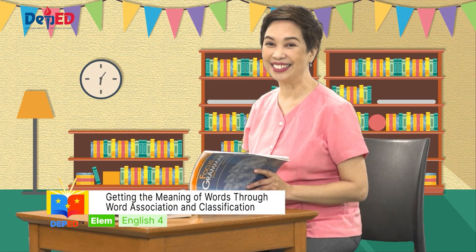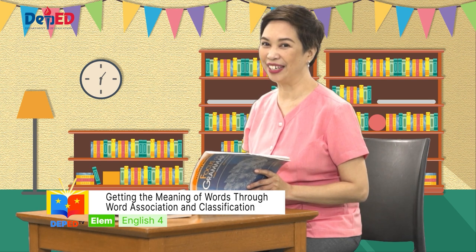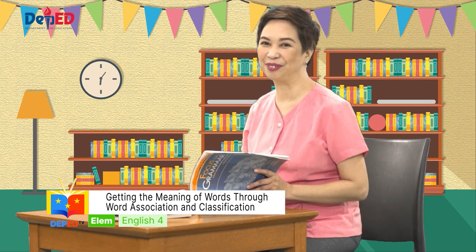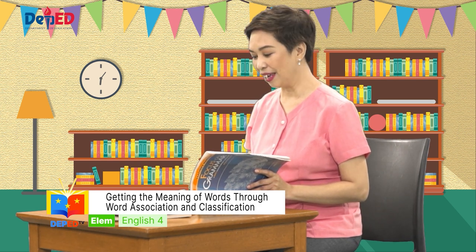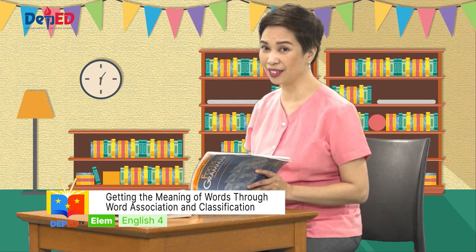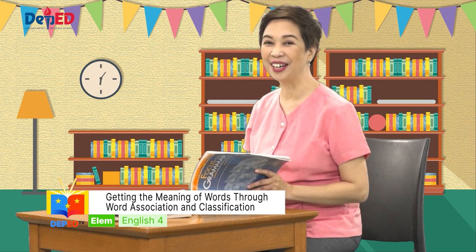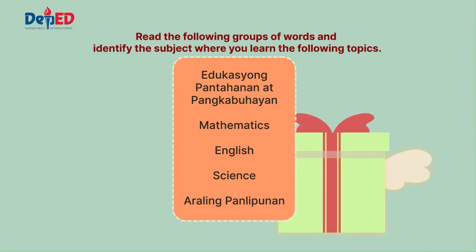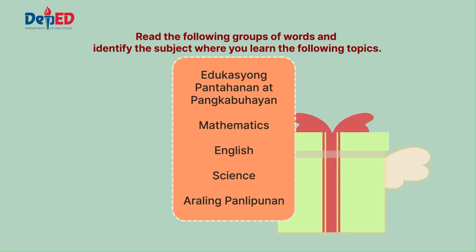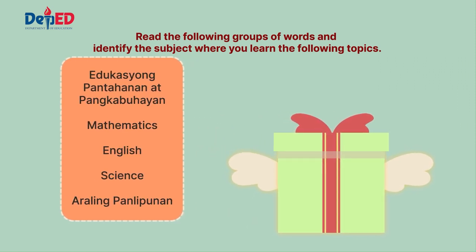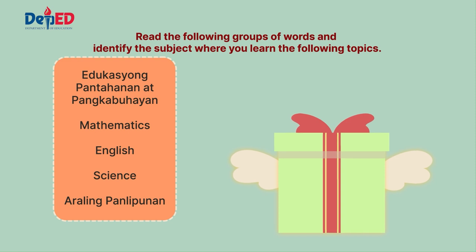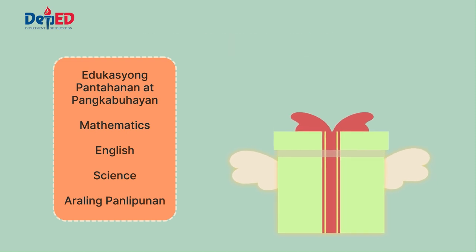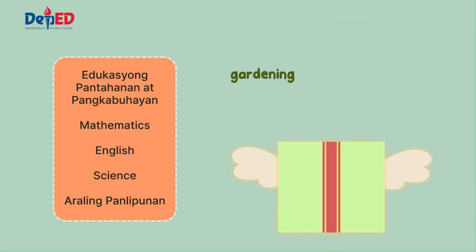Hi kids! I'm trying to find out what are the things I have learned in my subject. Can you help me answer this activity? Read the following groups of words and identify the subject where you learn the following topics. The subjects that we will choose from are written inside the box. The first group of words are gardening, sewing, and computer encoding.